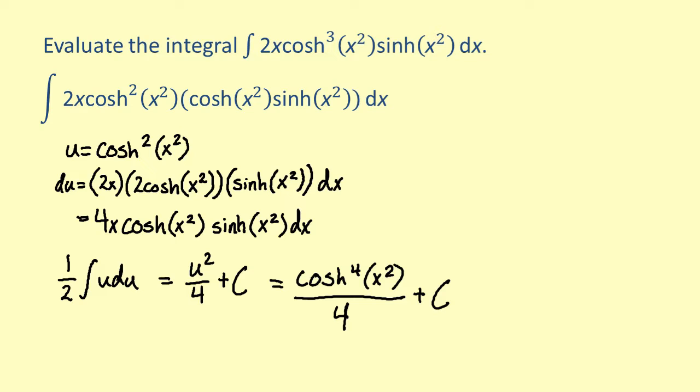So what seemed like a complicated integral evaluates to give the hyperbolic cosine to the 4th of x squared over 4 plus c. We'll be right back.